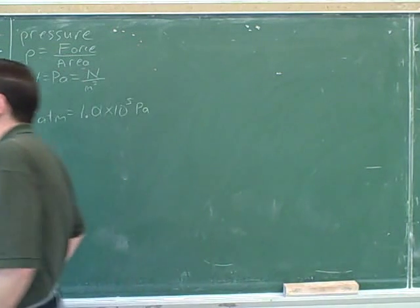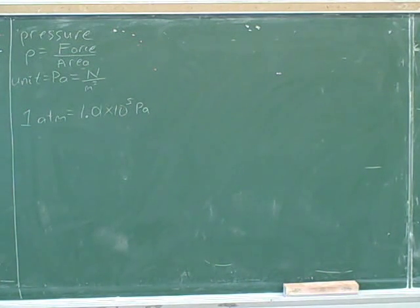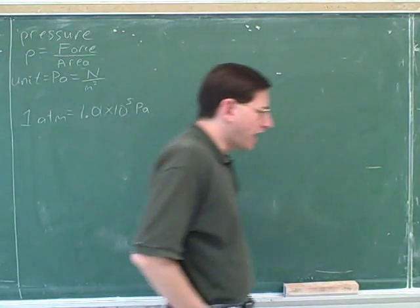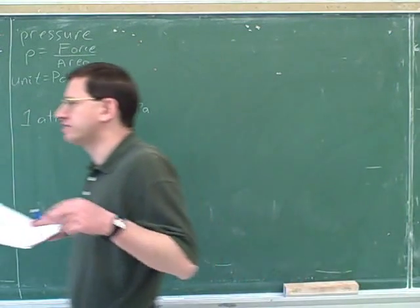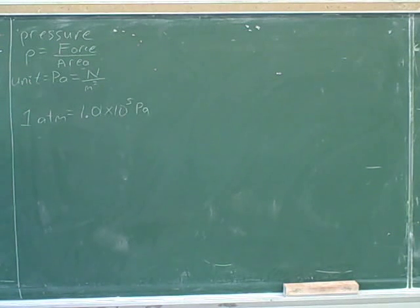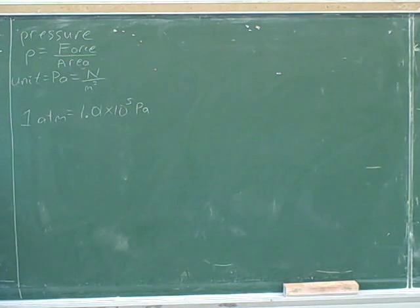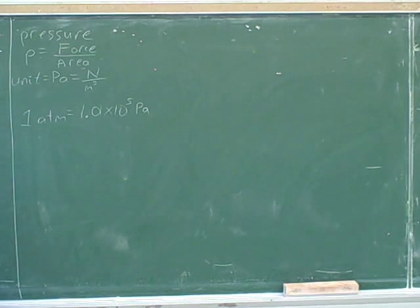We want to get some intuition for what pressure means. In this chapter we're focusing on gases, so we need an analogy for how gas behaves. Gases are really made out of tiny little molecules — billions, trillions, or quadrillions of molecules all flying around. We can imagine those molecules as tiny little ping pong balls. So we can think of the gas as a huge number of tiny ping pong balls flying around, too small to see but really there.